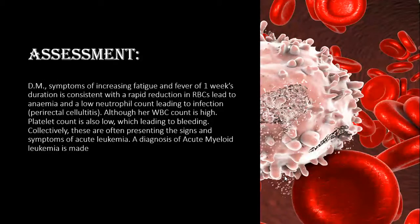Assessment: symptoms of increasing fatigue and fever of one-week duration are consistent with rapid reduction in RBCs leading to anemia, and a low neutrophil count leading to infection. These are primary symptoms indicating AML. Additionally, the patient has perirectal cellulitis as an infectious complication. Although her WBC count is high, platelet count is also low, leading to bleeding risk.